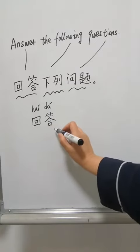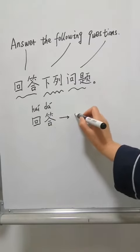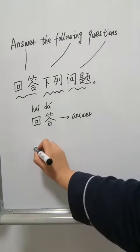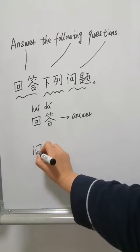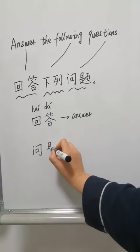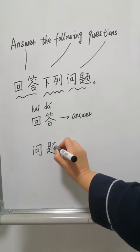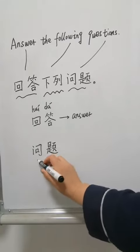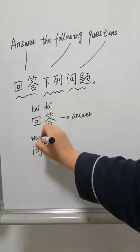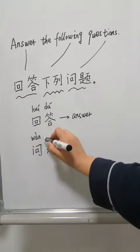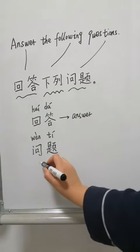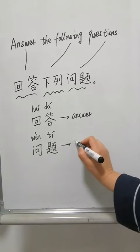答. 回答. 提. 问. 提 问. Chinese P is wu, en, weng, te, yi, qi, weng. Tí, weng, tí means question.